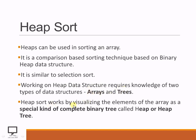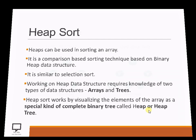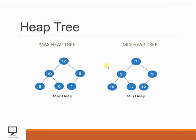HipSort works by visualizing the elements of an array as a special kind of complete binary tree. With the help of this complete binary tree we can implement a Hip or HipTree, and that HipTree is the main thing from which we are going to start the HipSort. HipTree can be represented in two ways: either MaxHipTree or MinHipTree.